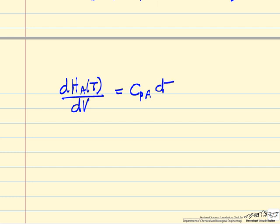And then we need one more term, and that's that the derivative of enthalpy, given temperature, with respect to volume, is equal to the heat capacity of that component times the derivative of temperature with respect to volume. So we can make these substitutions into our equation up here and simplify it further.